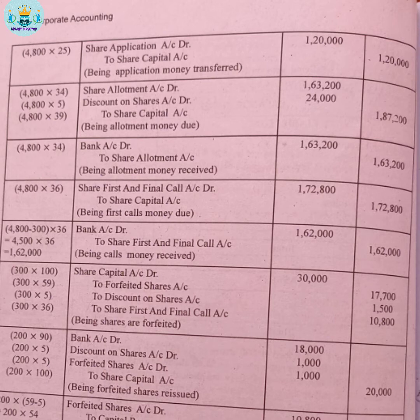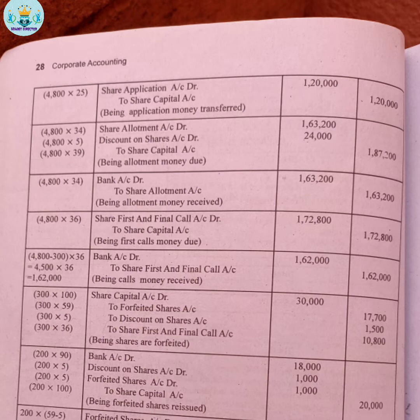The third entry is for allotment. Share allotment account is debited. The allotment amount is Rs.34 per share, but we must account for the 5% discount as well. For 4800 shares the allotment debit includes the discount on shares. Share capital account is credited with the face value portion. The total allotment figure is Rs.1,80,200, including discount adjustment.